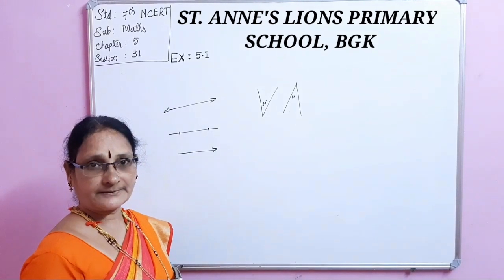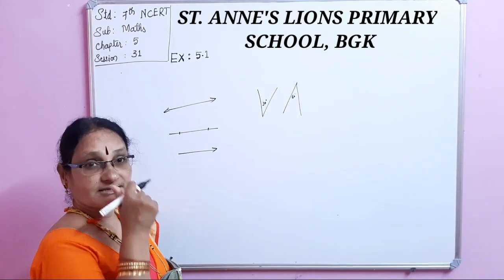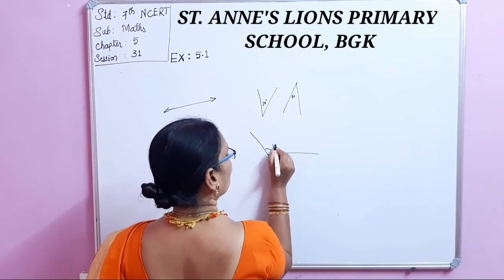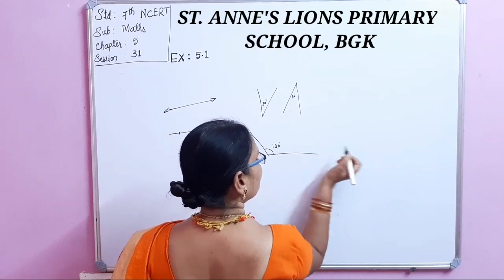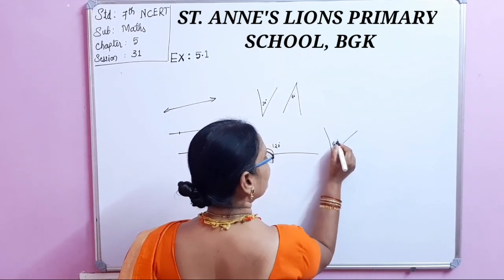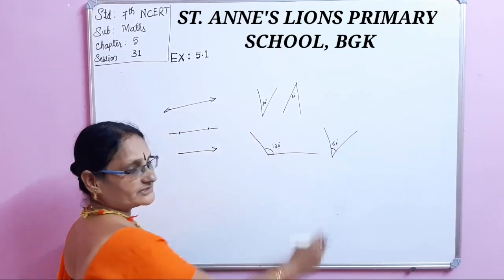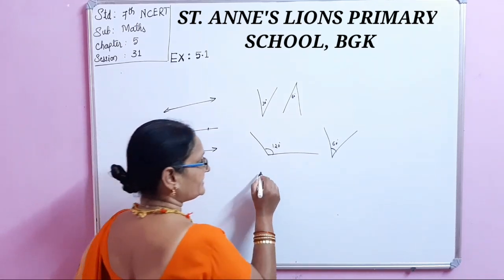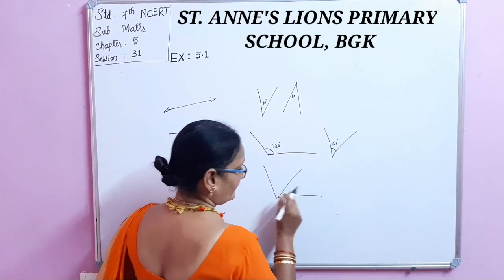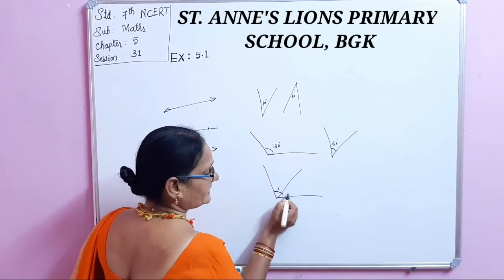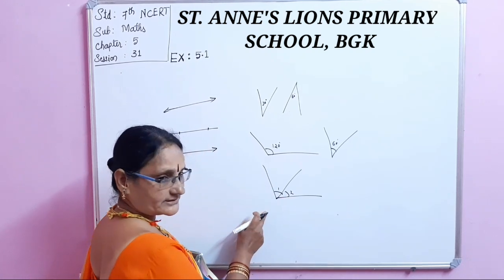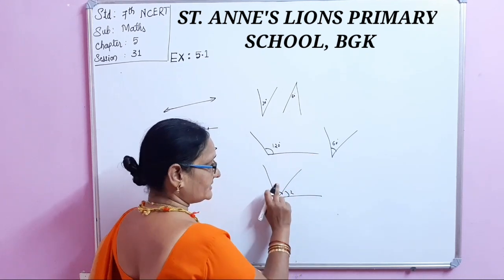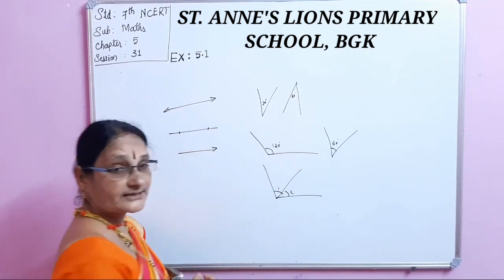Next comes supplementary angles. Supplementary angles means the sum of two angles is 180 degrees. For example, if one angle is 120 degrees, its supplementary angle is 60 degrees — 120 plus 60 equals 180 degrees. Next comes adjacent angles. Adjacent angles must have a common vertex and a common arm.